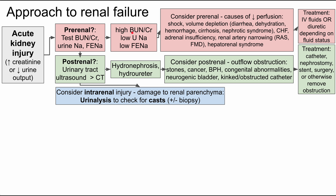Next is post-renal. With post-renal azotemia, we do imaging — preferably ultrasound over CT. If you see hydronephrosis (too much fluid in the kidney) or hydroureter (too much fluid in the ureters), consider a post-renal obstruction. Causes include stones, cancer, BPH, congenital anomalies, neurogenic bladder (such as in a diabetic who can't contract their bladder), or a kinked obstructed catheter. Treatment usually requires intervention — a catheter, nephrostomy, stent, or surgery — often involving a urology consult.